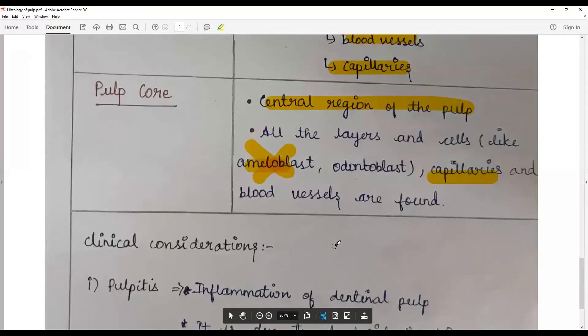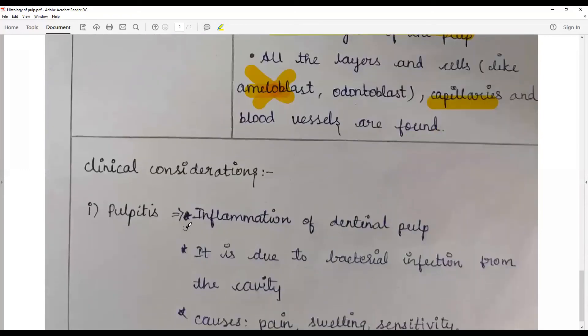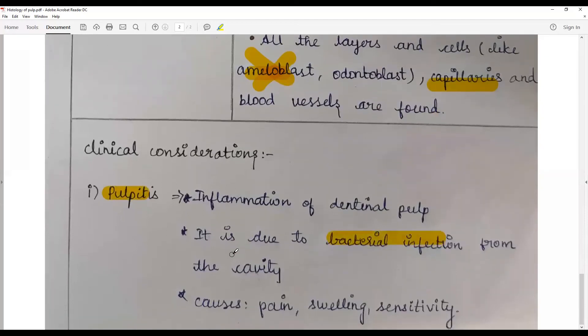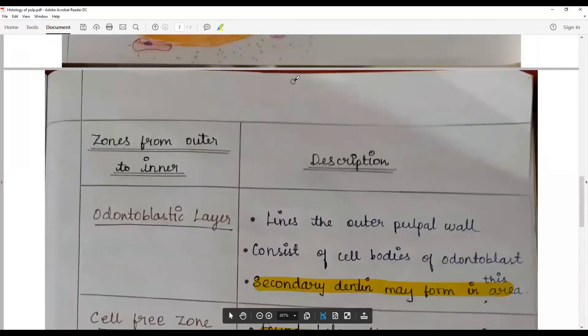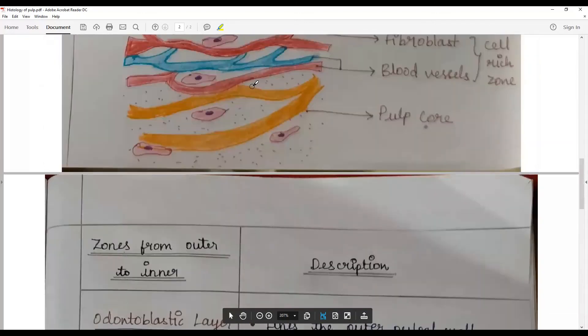Clinical consideration: pulpitis - inflammation of the dentinal pulp by bacterial infection from the cavity. Here pulp is engorged, blood vessels are there, a lot of defense cells come in and may cause pain, swelling and sensitivity.